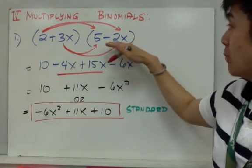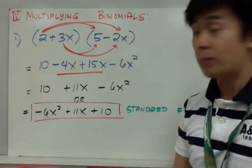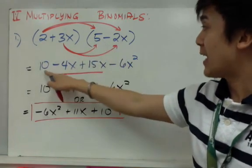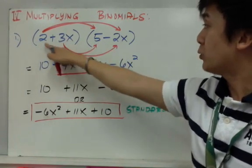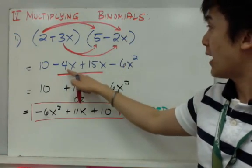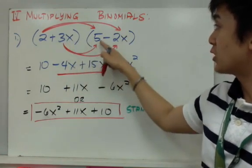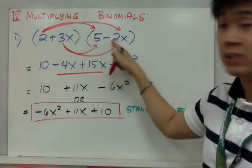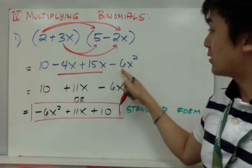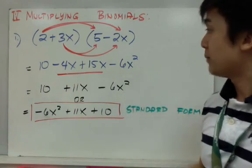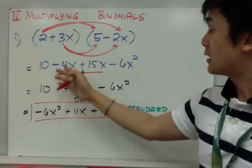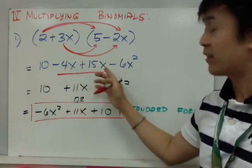So let's distribute the first factor, which is 2 + 3x, to the second factor, which is 5 - 2x, both of which are binomials. So 2 × 5 is 10, 2 × -2x is -4x, 3x × 5 will give us 15x, and 3x × -2x is -6x².